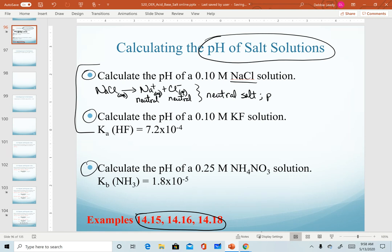Since it's a neutral salt, the pH equals seven. That is all that needs to be done to calculate the pH. The concentration has no bearing on this solution. So for any neutral salt, the pH is just seven.